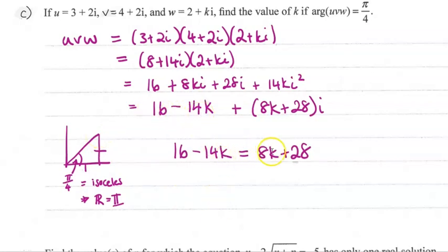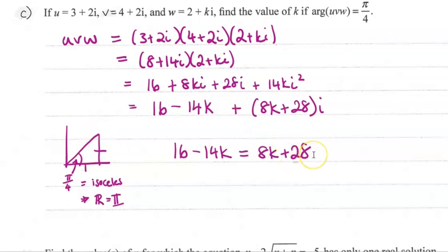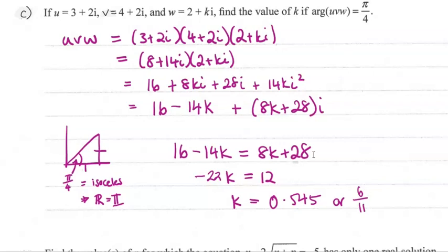So 16 minus 4k is equal to 8k plus 28. Some people get confused about why we haven't written an i here — i is giving us the direction, but 8k plus 28 is giving us how far it's gone, so the length itself is 8k plus 28. Set those equal and solve them, and we get that k is 0.545, or 6 elevenths.